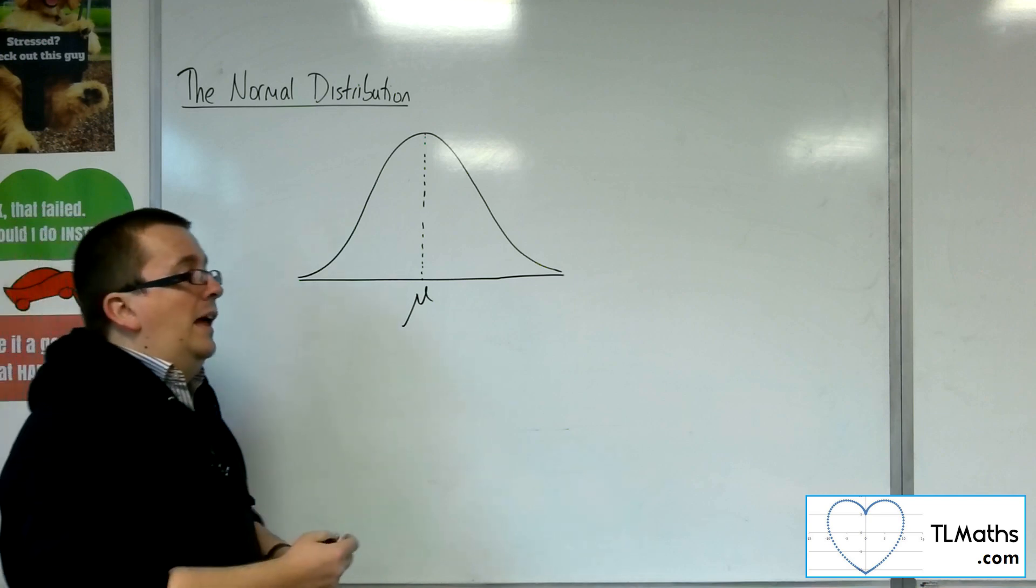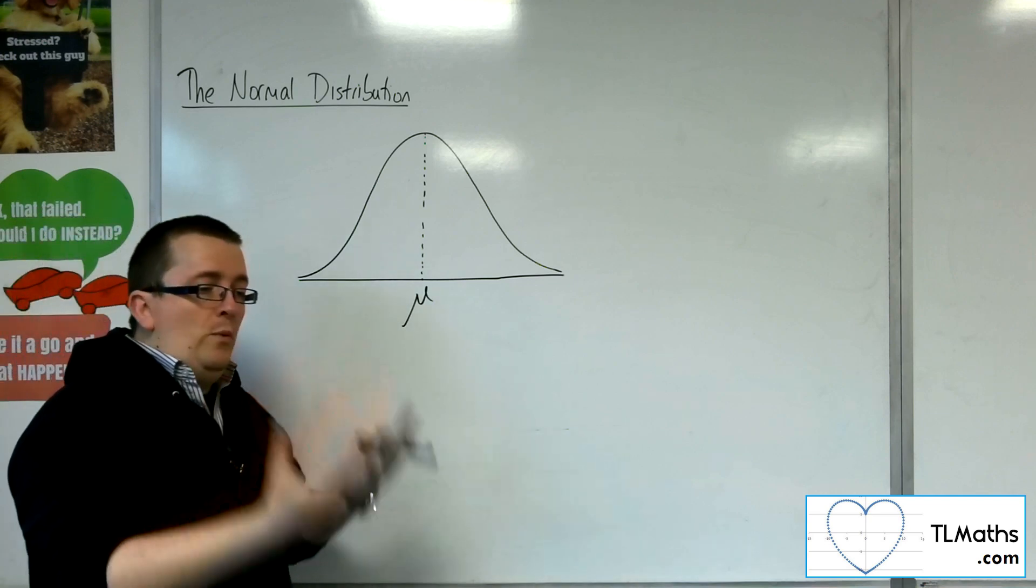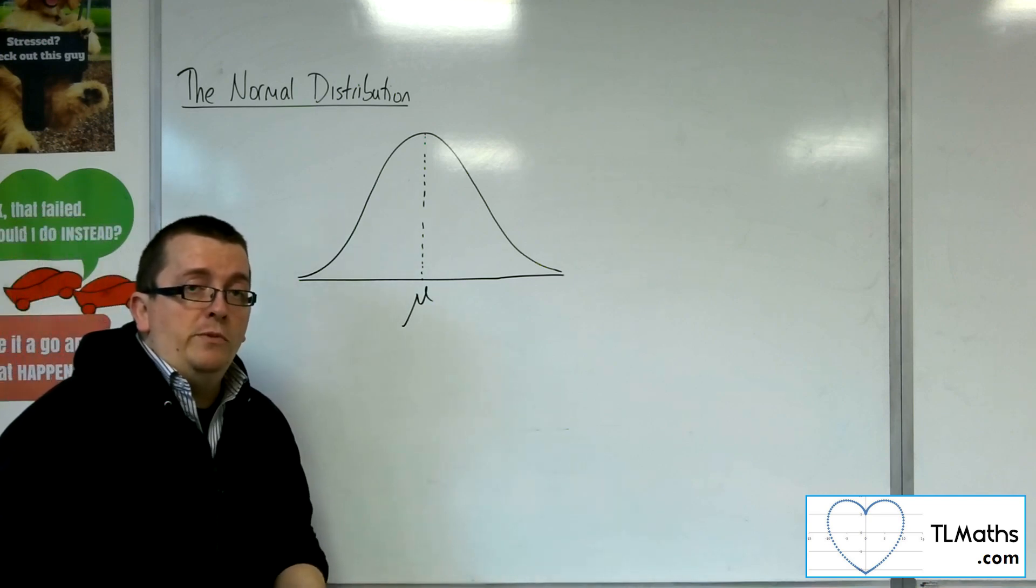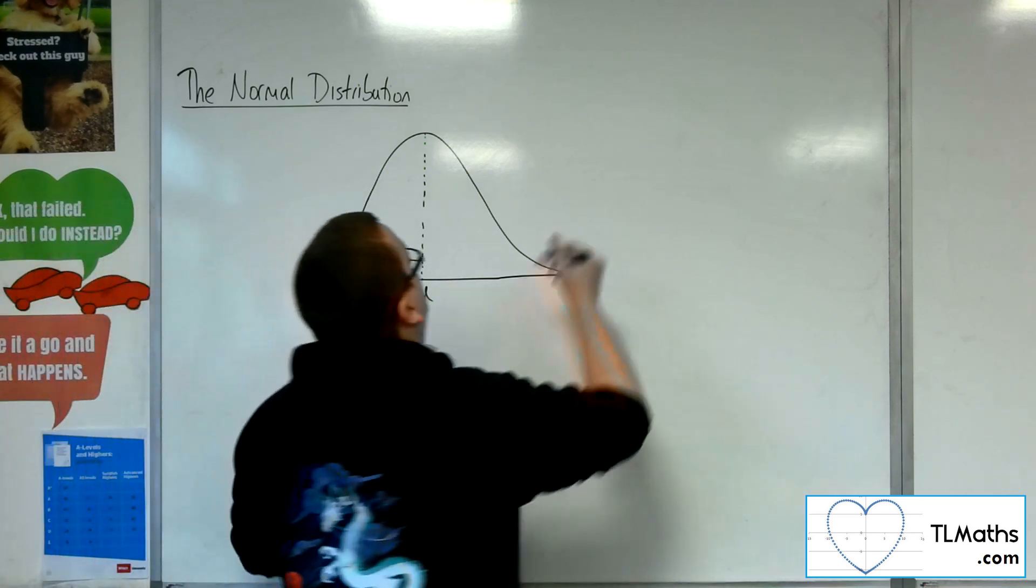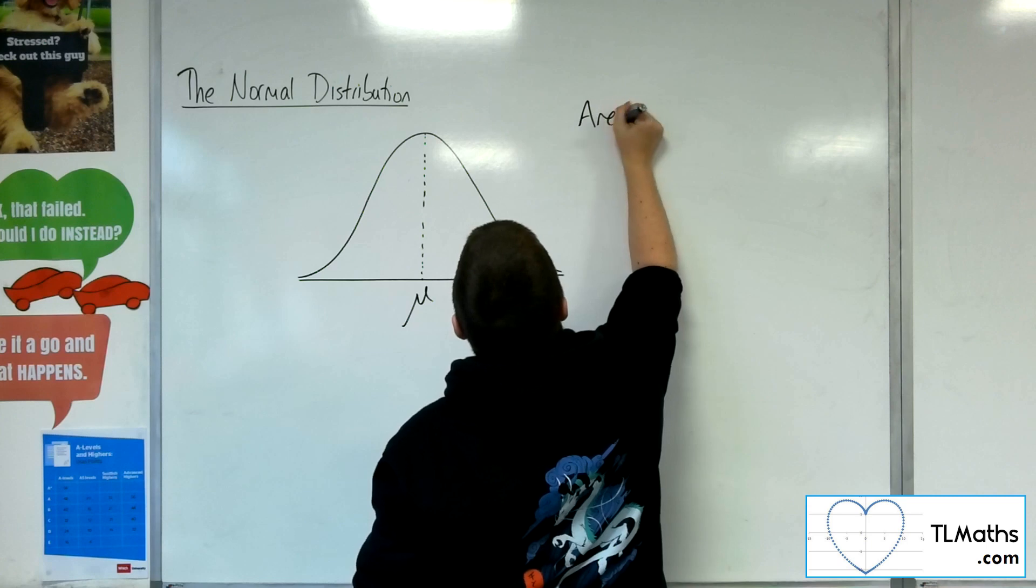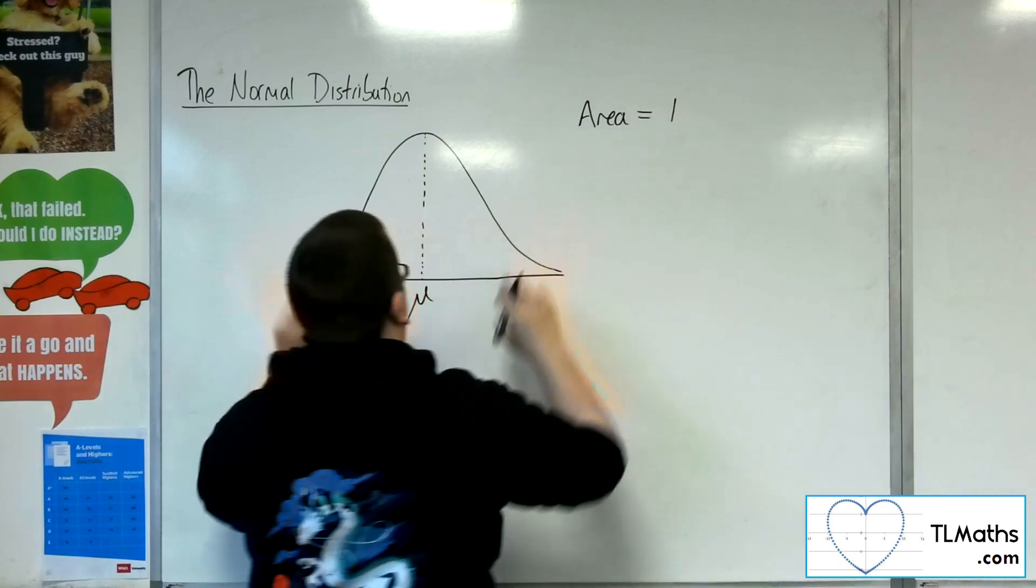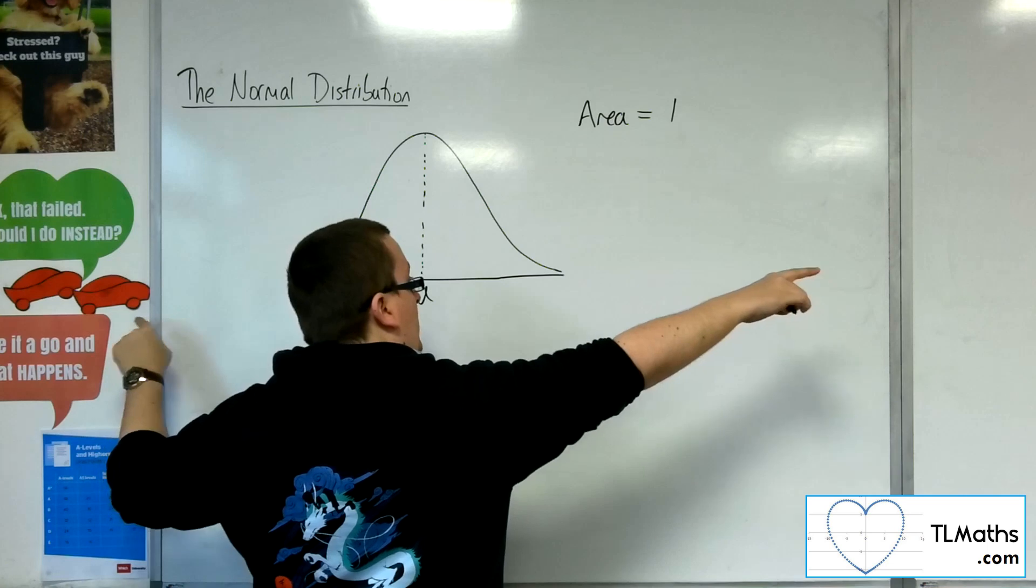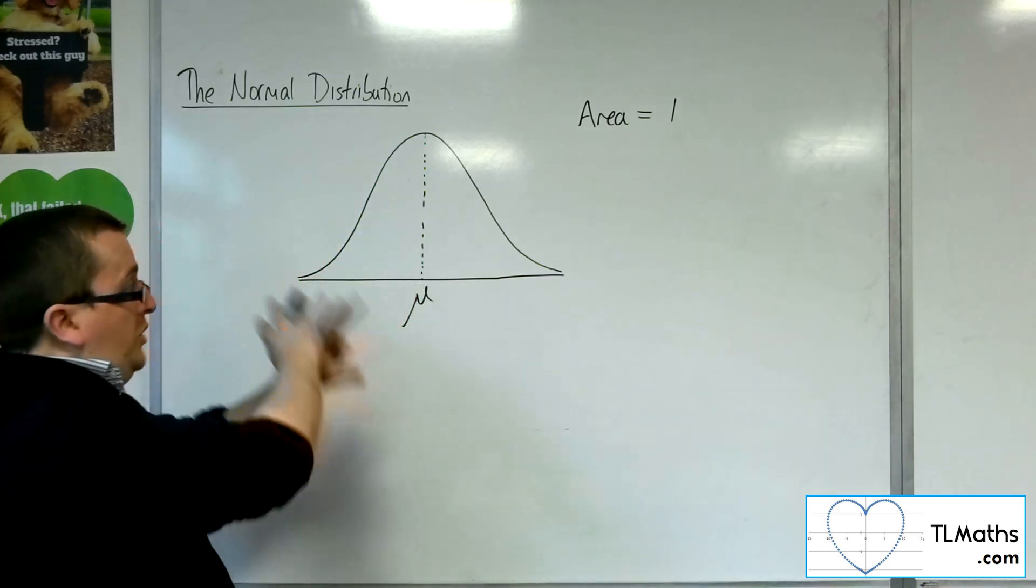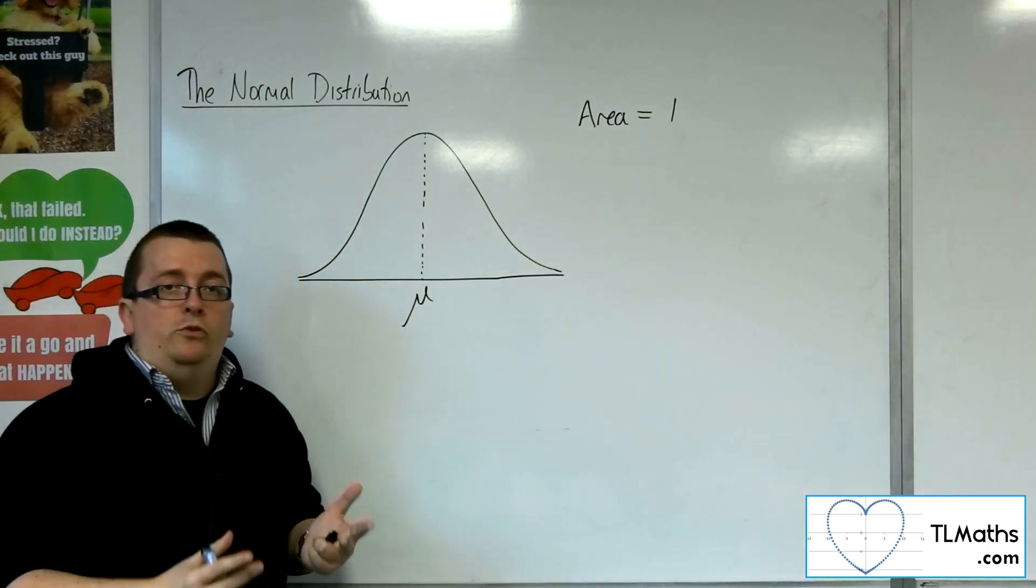But still, as we should be aware with the discrete distributions, like the binomial, all the probabilities must still add up to 1. So the area must be equal to 1. The total area. Okay, so including those little bits that go off to infinity, the total area must all be equal to 1.